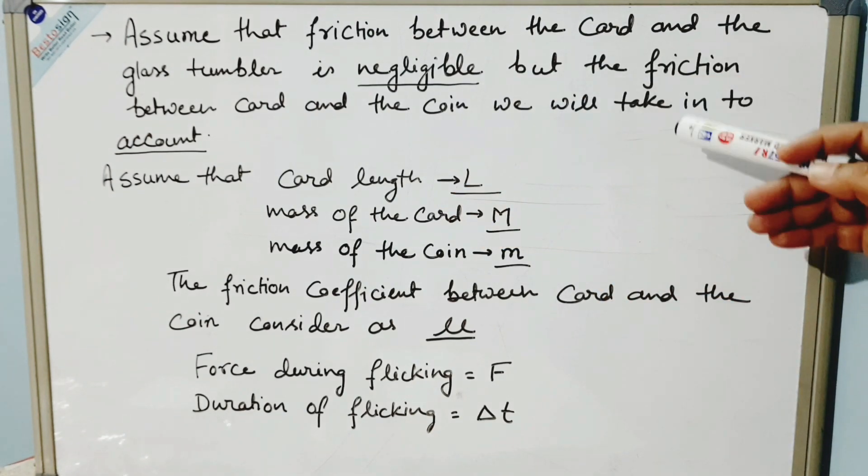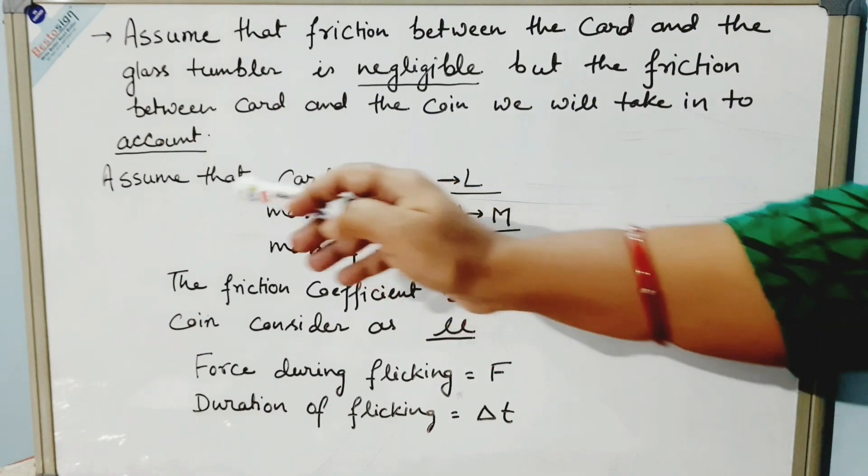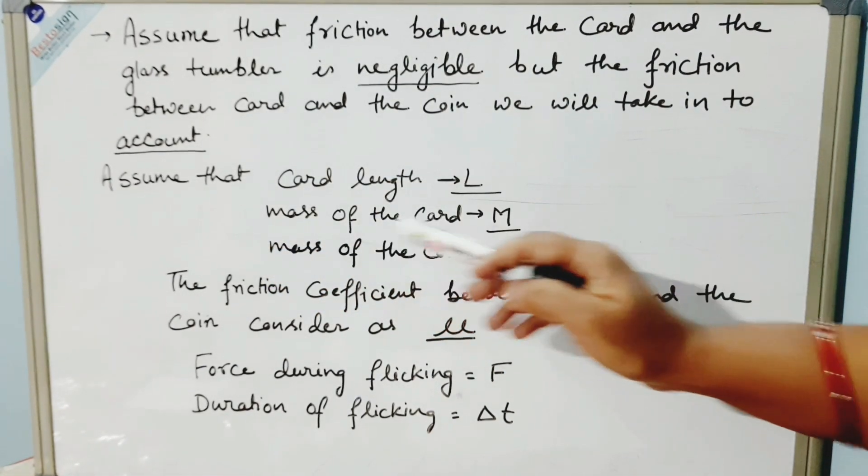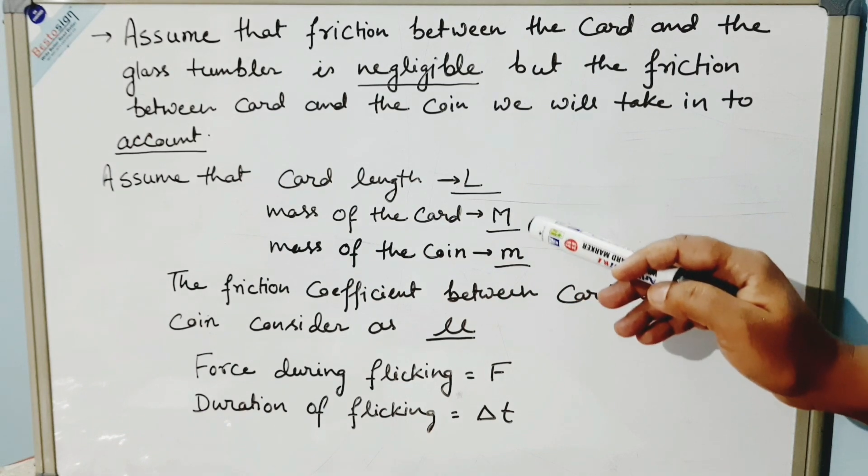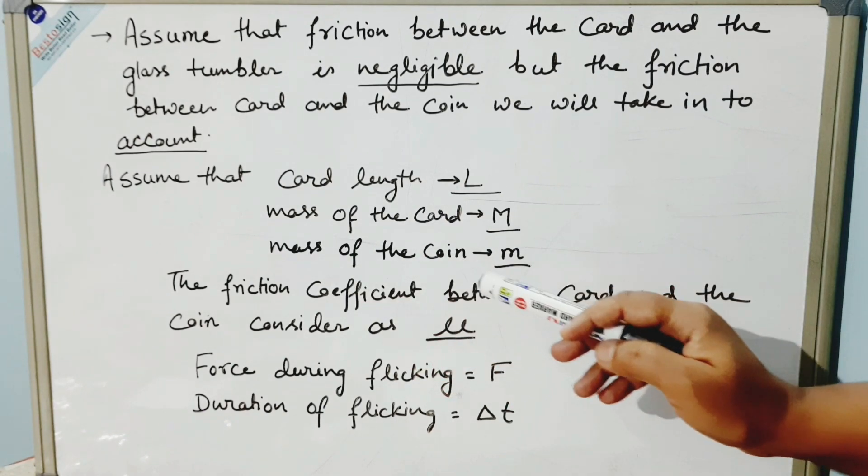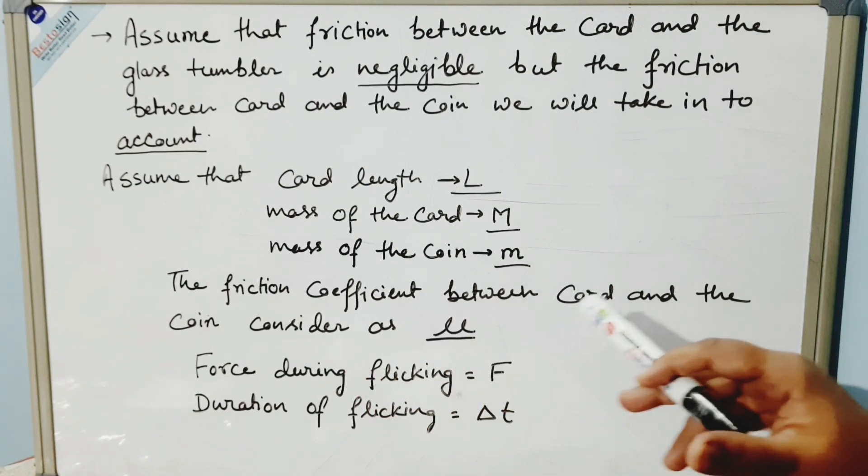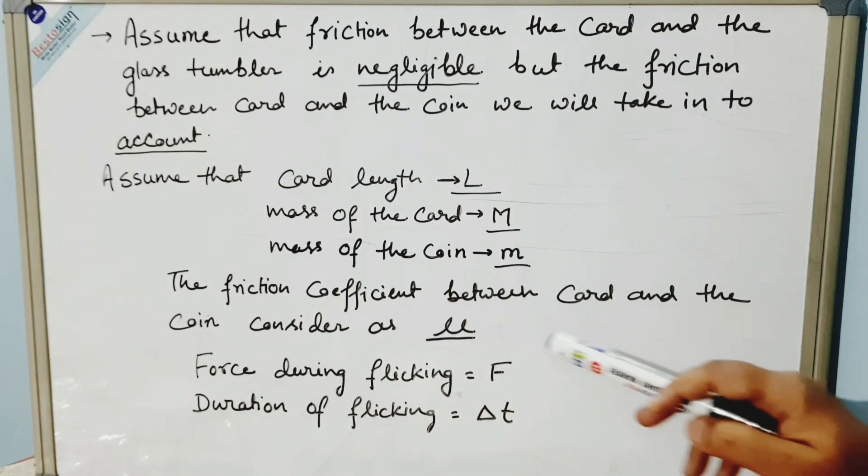But the friction between the card and the coin we will take into account. We'll assume that card length = L, mass of the card = M, mass of the coin = m, and the friction coefficient between the card and the coin consider as μ.